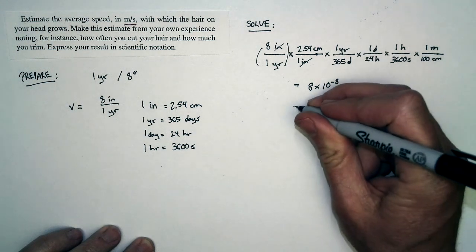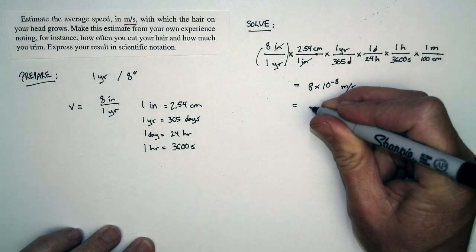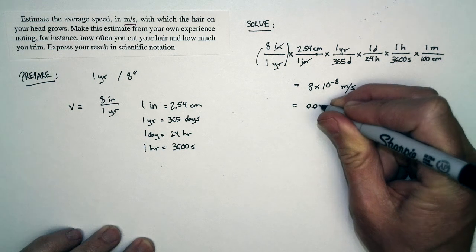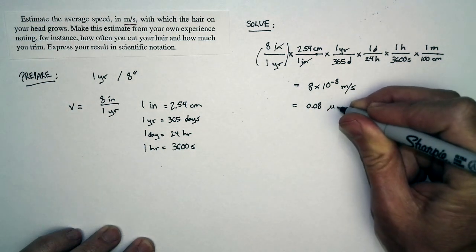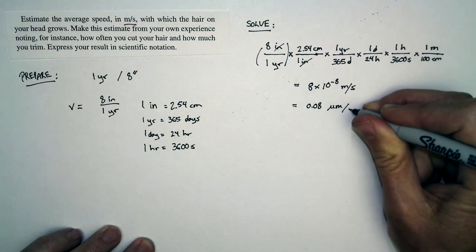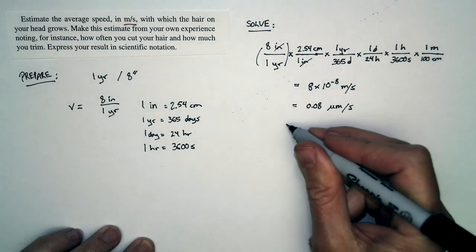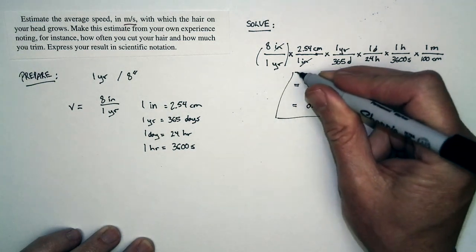8 times 10 to negative 8 meters per second, or if I want to write this in microns, it's 0.08 microns or micrometers per second. That's the speed that we're looking at.